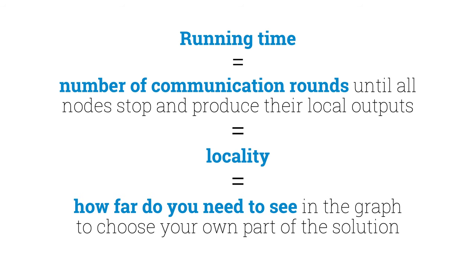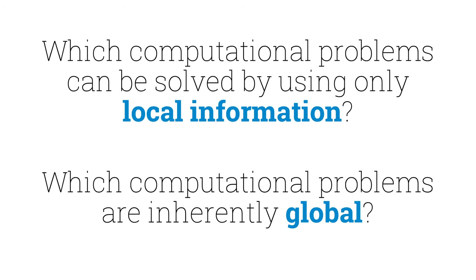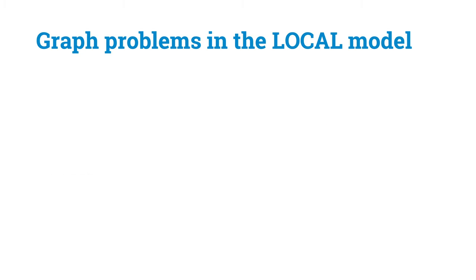Let's recap. All these notions are the same in the local model: what is the running time, how many communication rounds are needed, what is the locality of the problem, or how far do you need to see in the graph? So we can rephrase our key question as follows: which computational problems can be solved by using only local information, and which computational problems are inherently global?